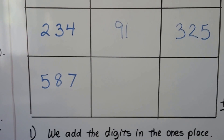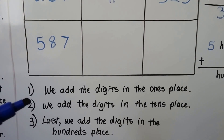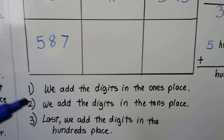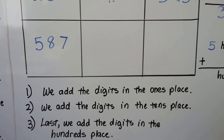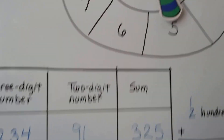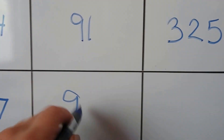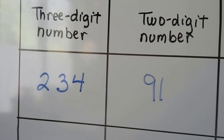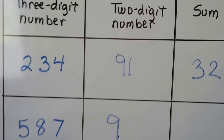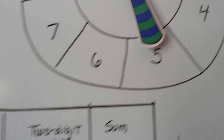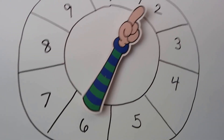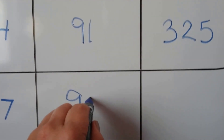Let's try it again with 587. We add the digits in the ones place, then the tens place, then the hundreds place, and we remember to regroup if we have to. So let's spin to find what the tens place digit is going to be. We got a nine again. Let's spin again to find out what's going to be in the ones place — it landed at the two. So we're going to add ninety-two: nine tens and two ones.